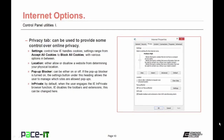The Privacy tab allows some control over online privacy. The Settings section controls how Internet Explorer handles cookies, ranging from Accept all cookies to Block all cookies with various options in between. The location section either allows or disallows a website from determining your physical location through your IP address. The pop-up blocker can be on or off, and settings allow management of which sites can use pop-ups. The InPrivate section controls whether toolbars and extensions are disabled when using IE's InPrivate browsing function.